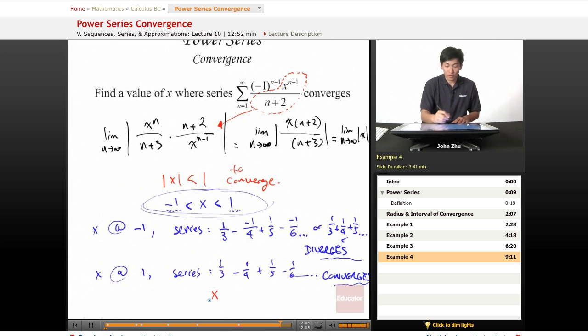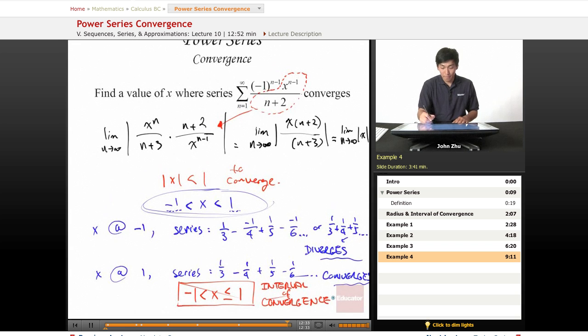And together we have an interval of convergence. At x = -1, x cannot equal -1 because it diverges, so it must be greater than -1. However, at 1 it converges, so x can equal 1. So here is our final answer: the interval of convergence is the values of x where x is less than or equal to 1 and greater than -1. So as long as x is anywhere in between, x can be 0 or 1 for this whole series to converge.